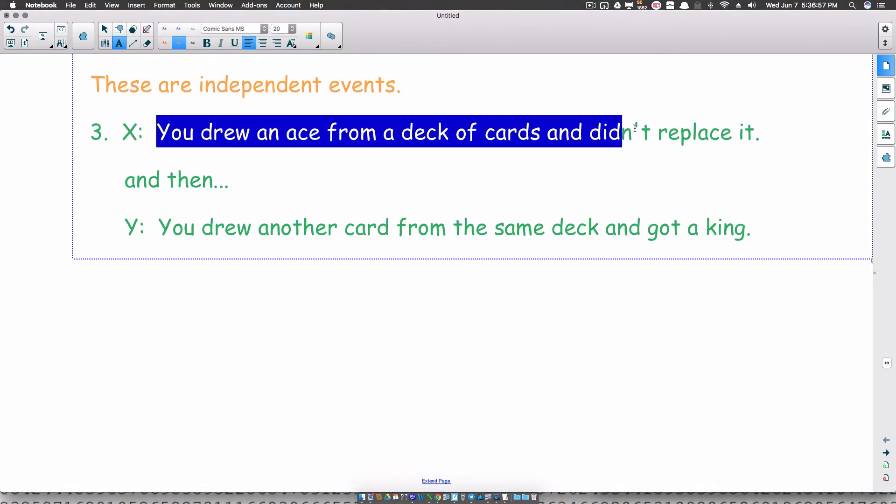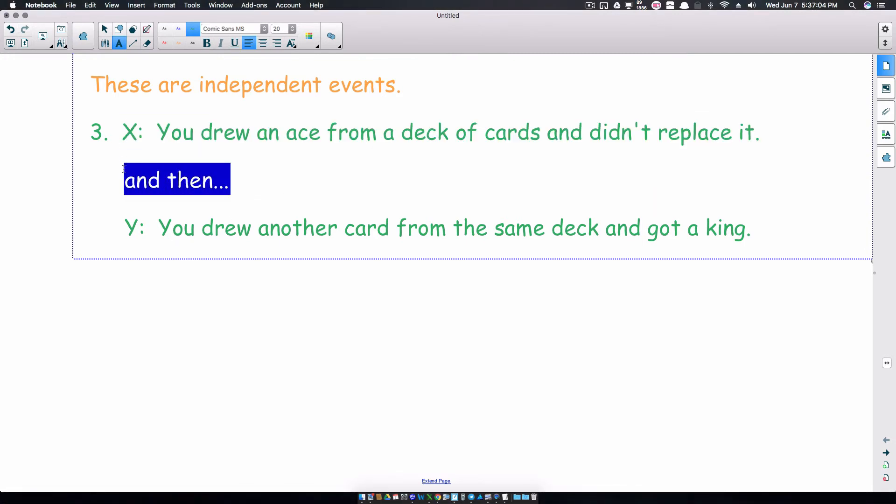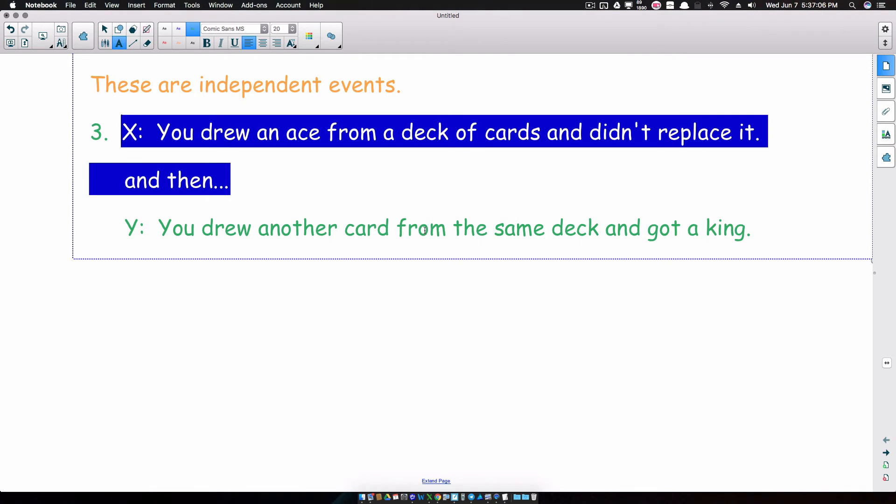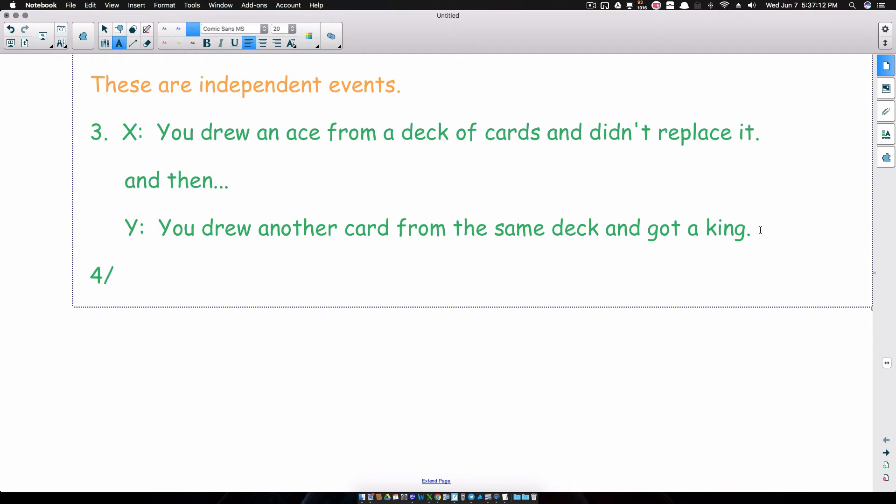So, you drew an ace from a deck of cards and you didn't replace it. Oh, you did not replace it. Okay. So, let's just kind of ignore all this junk right here. And let's just talk about what's the probability of getting a king. Let's think about this. The probability of getting a king from a deck of cards is 4 out of 52 because there's 4 kings out of 52 cards in the deck. And that reduces to 1/13.